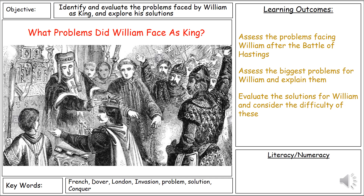Hello Year 7, welcome to today's lesson where we're going to be looking at what problems did William face as King. As you know, we left last lesson with William having won the Battle of Hastings and most of you wrote your assessments on it. Those of you who haven't will be writing them when you come back, so make sure you go over some of the reasons we looked at. A lot of it is online on Show My Homework.